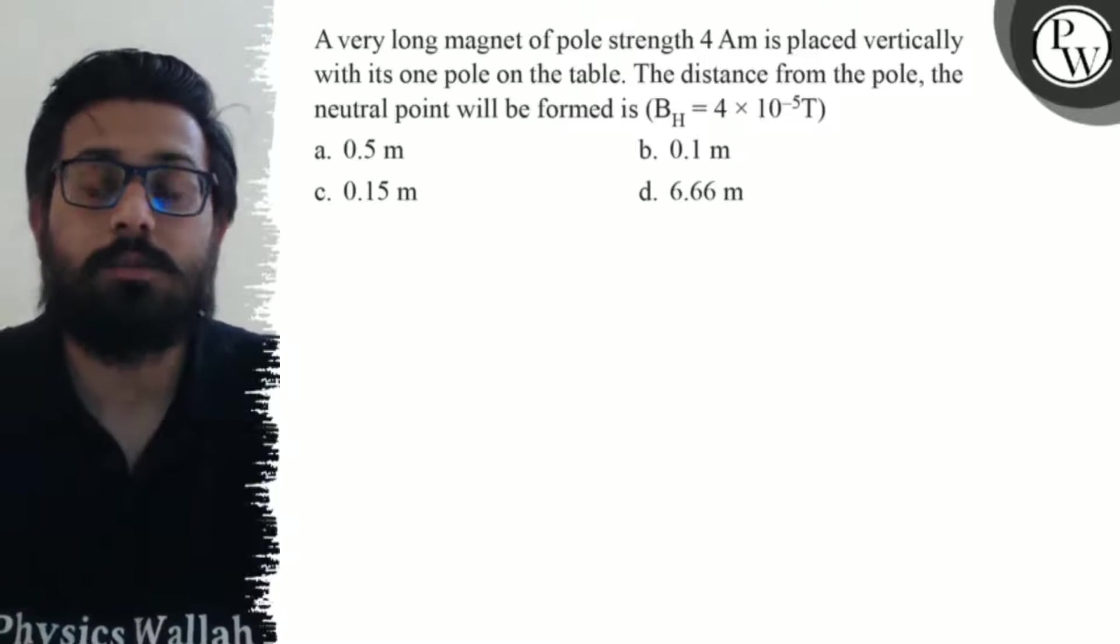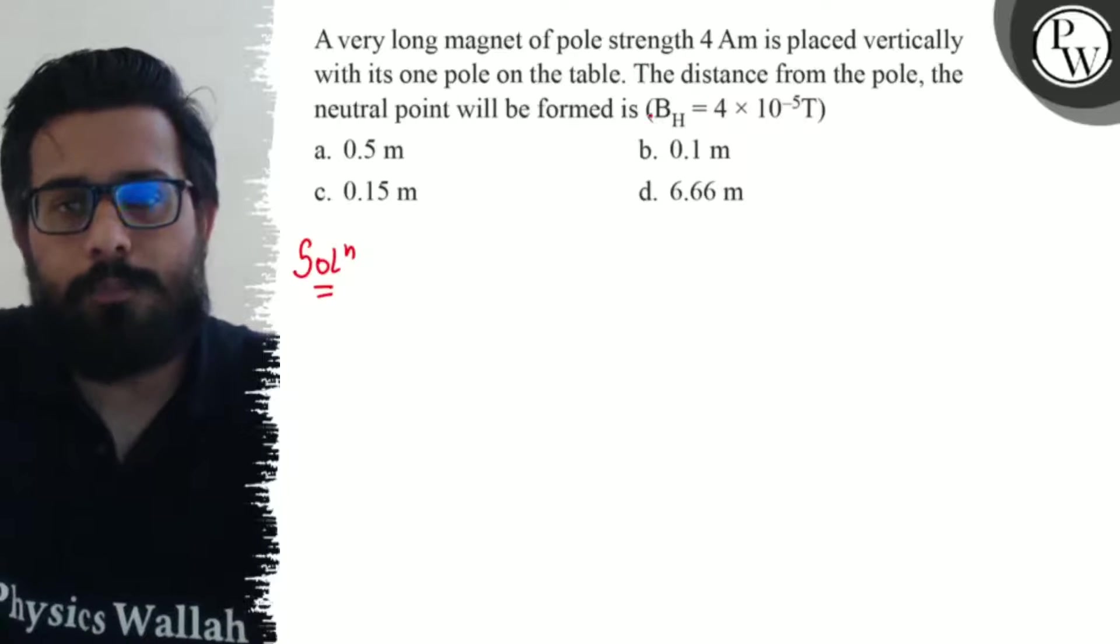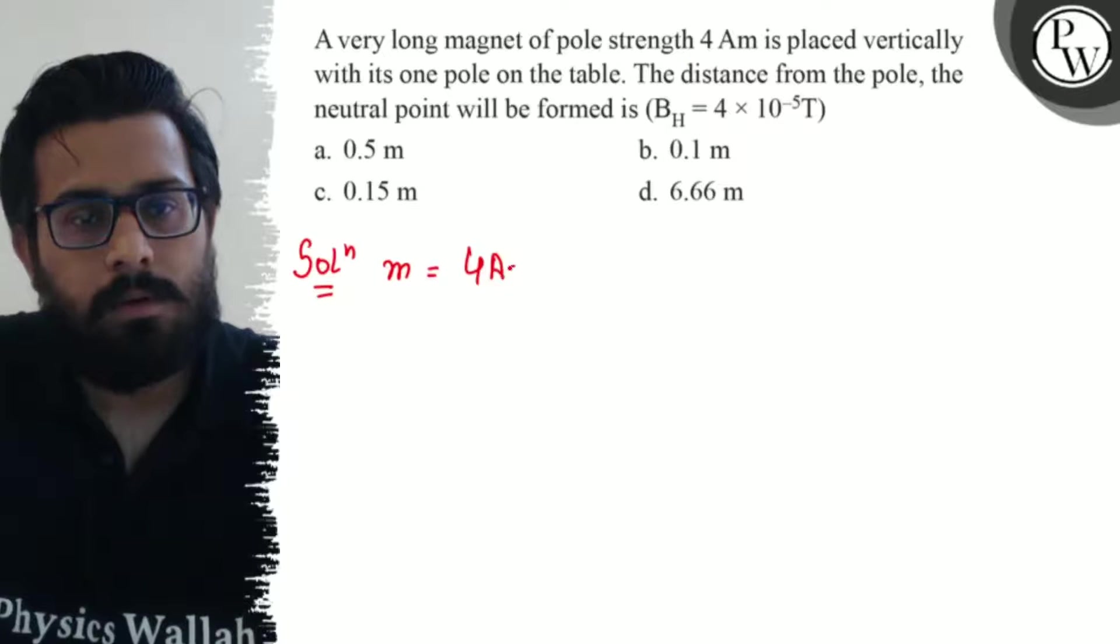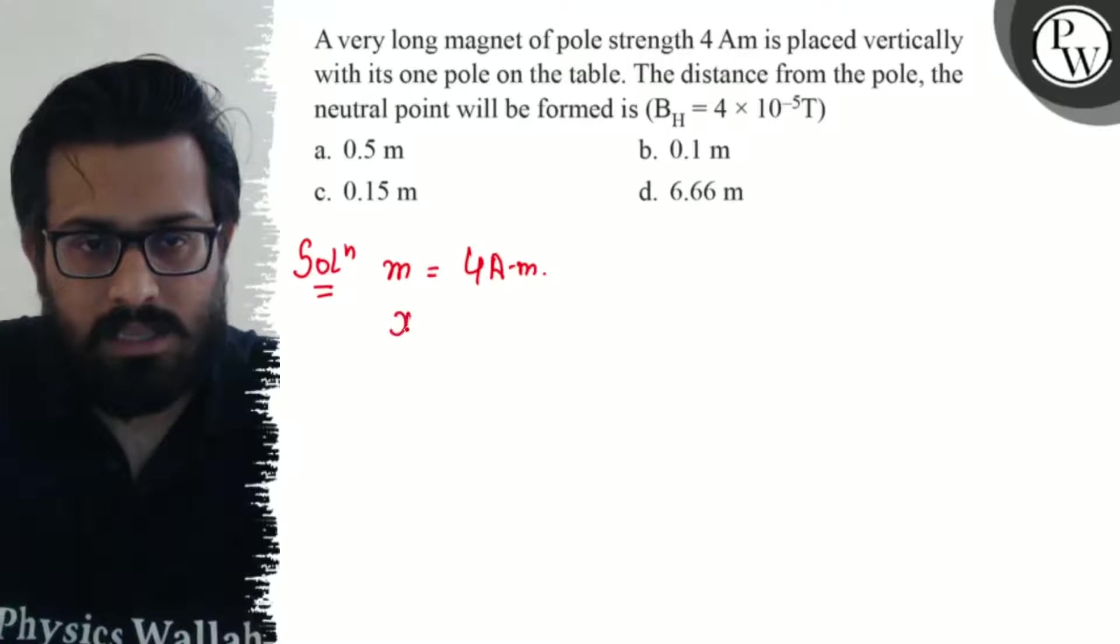Pole strength m = 4 ampere-meter, and we need to find distance x. The horizontal component of Earth's magnetic field is given as Bh = 4 × 10^-5 Tesla.